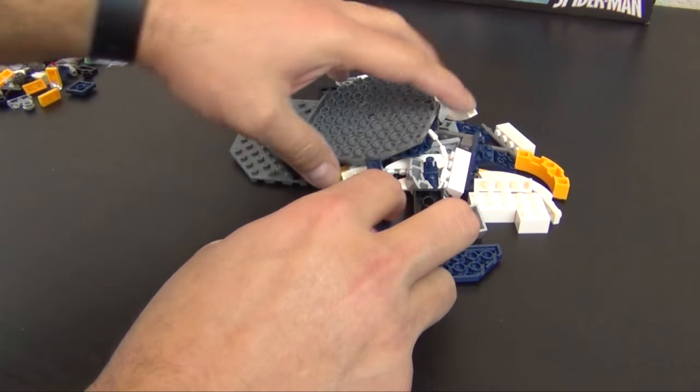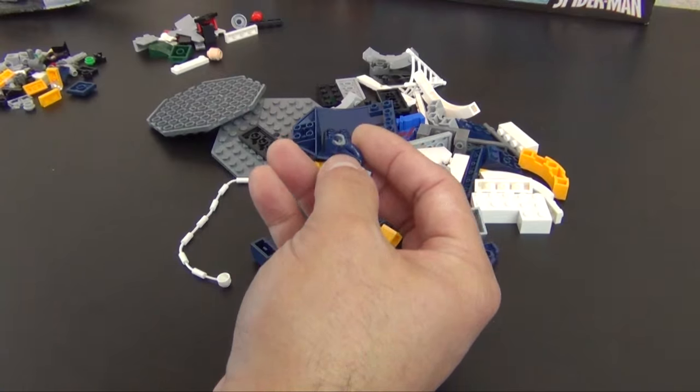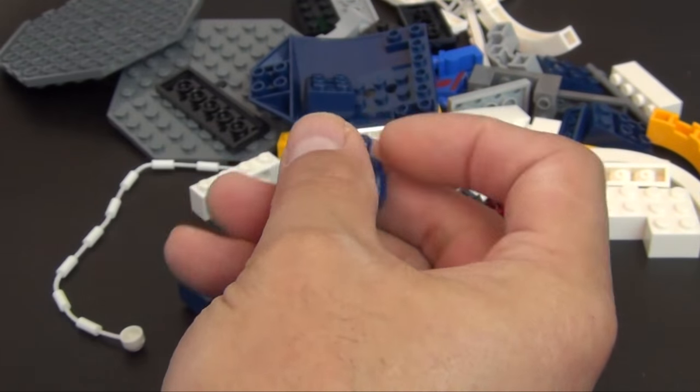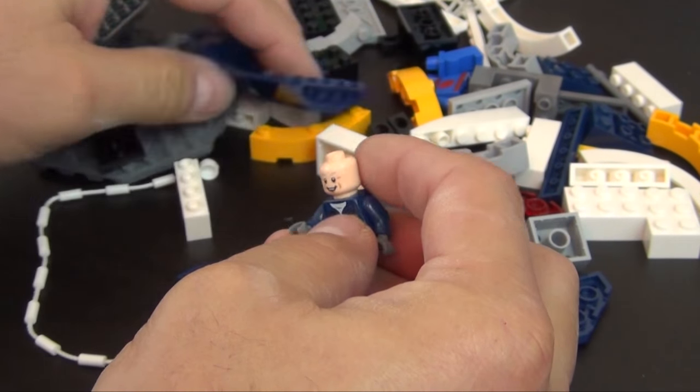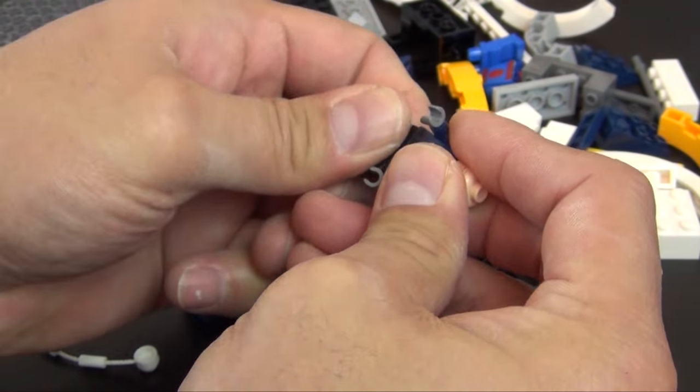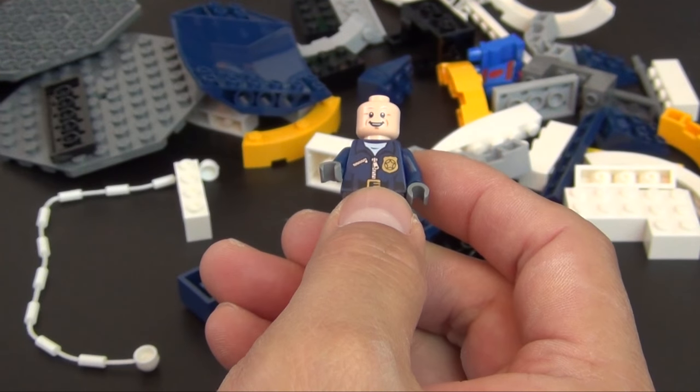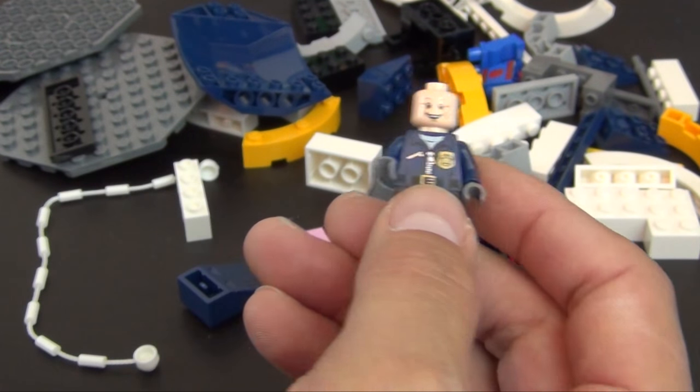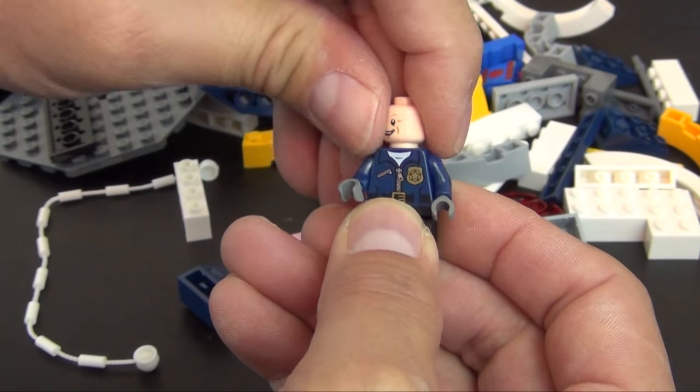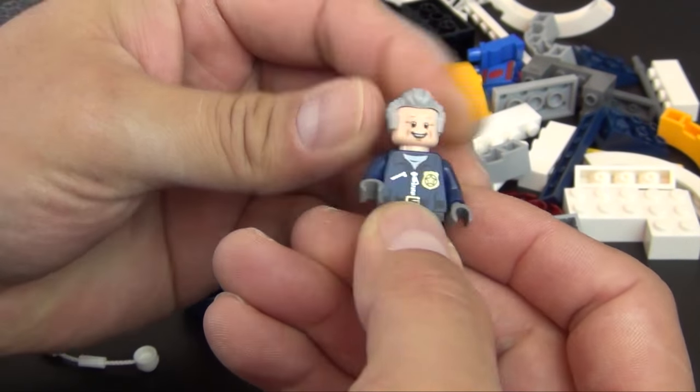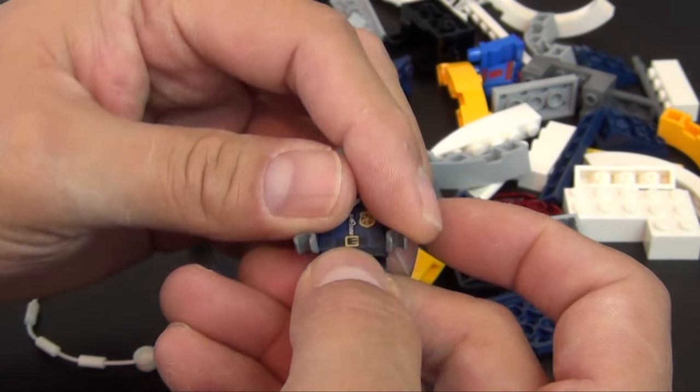Let's get the instructions open. Looks like we're going to build some minifigures first. We have Captain Stacy. His black legs are non-decorated, it's just the torso. He does have a double printed face - you can see that's the happy face, and then we have a scared, screaming face. Put the happy face on, he's got some gray hair. That's our first minifigure.